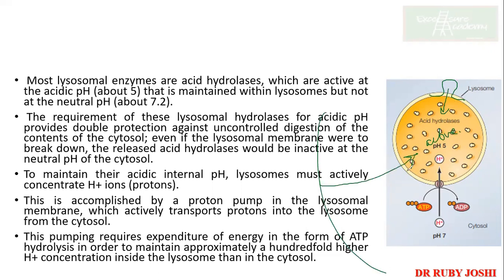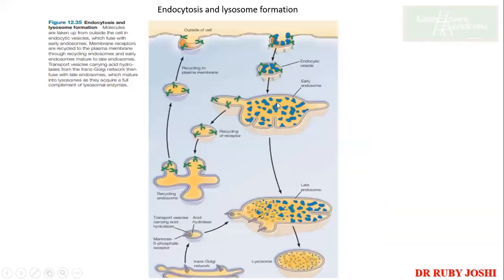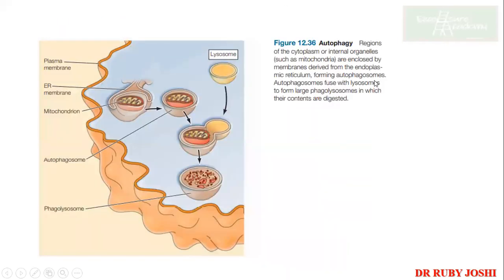Material taken up by phagocytosis goes and fuses with the lysosome for degradation, forming a phagosome. In autophagy, if an organelle like mitochondria is not functioning properly, it must first be wrapped by the ER membrane before fusing with the lysosome. Why does it need to be wrapped by the ER membrane rather than fusing directly with the lysosome, given that all membranes have similar phospholipid composition?